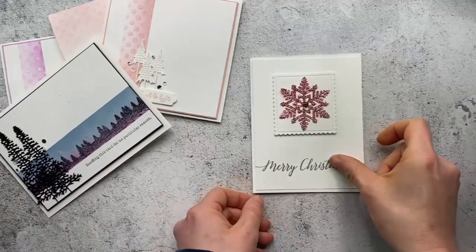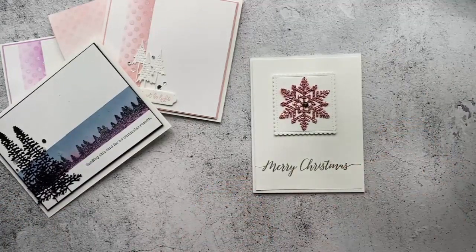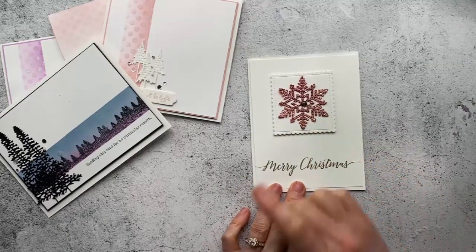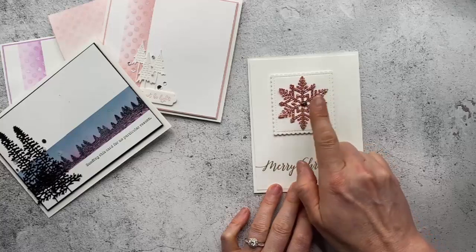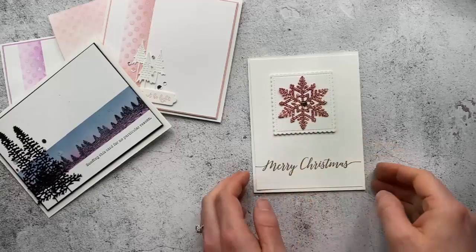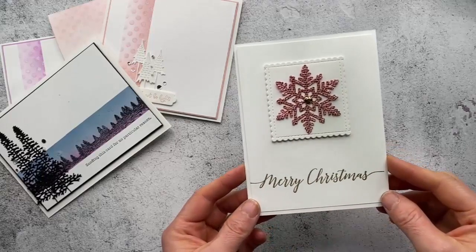This card is using the snowflakes dies that we have out and this is using the bee dazzling glitter paper where I've die cut it with the snowflake die and then I have spritzed it with flirty flamingo ink and water so that it dyes that bee dazzling glitter paper pink.